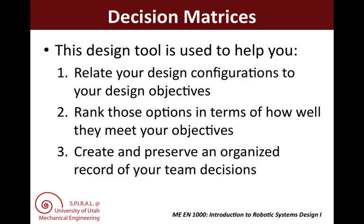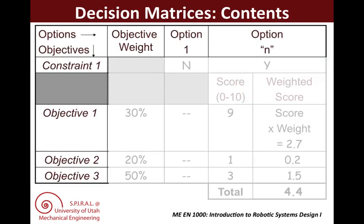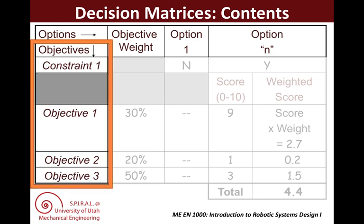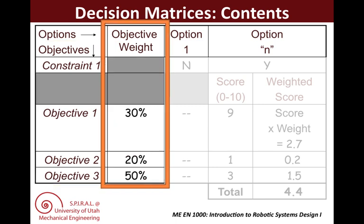They also provide an organized record of how your team came to decisions on your design configurations. In the leftmost column, we list our objectives with the constraints at the top. You can have more than one constraint and more than three objectives, of course. In the second column, we list the weights of the objectives. These should be consistent with your ordinal PCC rankings, and they become a crude quantification of those rankings. You may decide that the weight should be the same for multiple objectives. Note that the sum of this column should always be 100%. Just as with the PCC, these objectives should all come from a similar level. Note that the constraints do not get a weighting because they are binary — you either meet them or you don't.